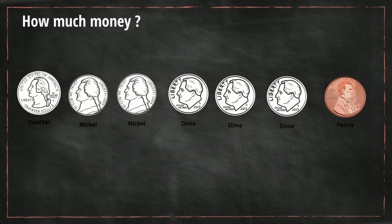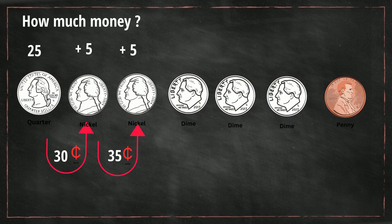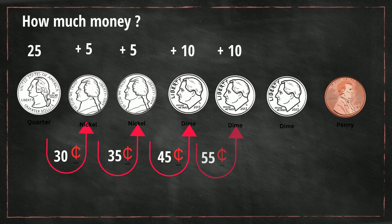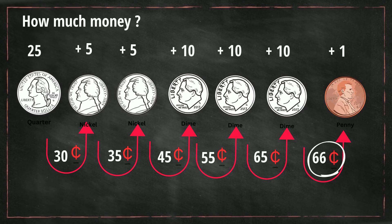We have 25 plus 5 which equals 30. Then add 5 more which is 35. Then let's add a dime which is 10, so that equals 45. Then add another dime which makes it 55. And then a third dime which makes it 65. And then add the penny, so we have 66 cents.